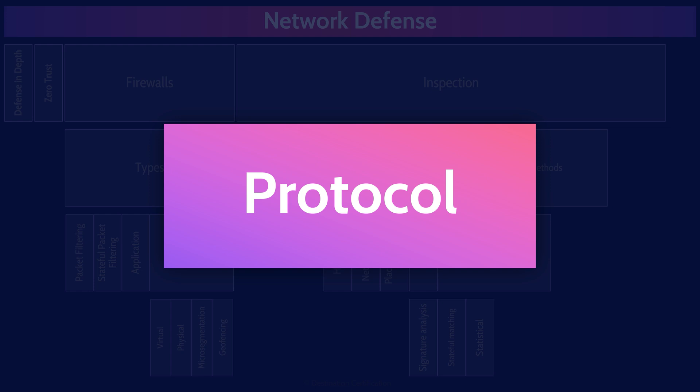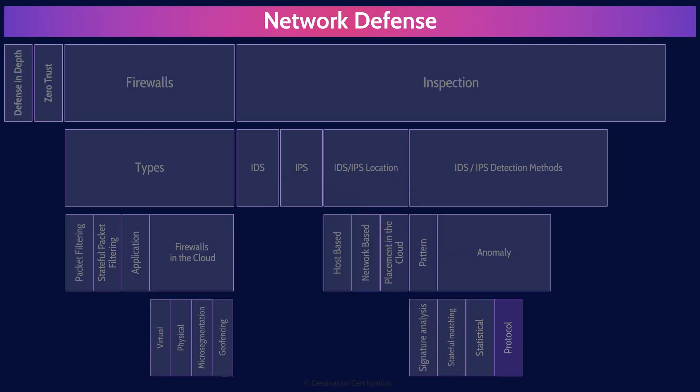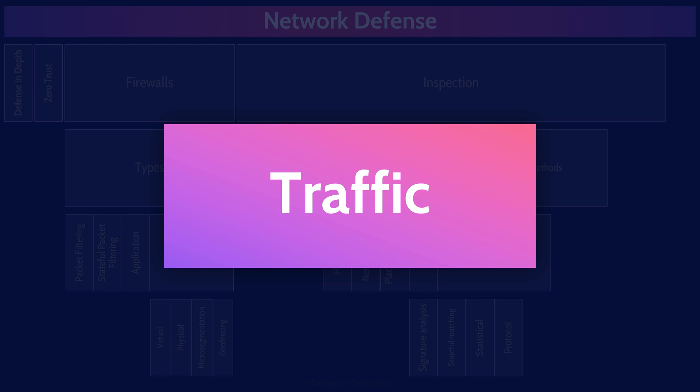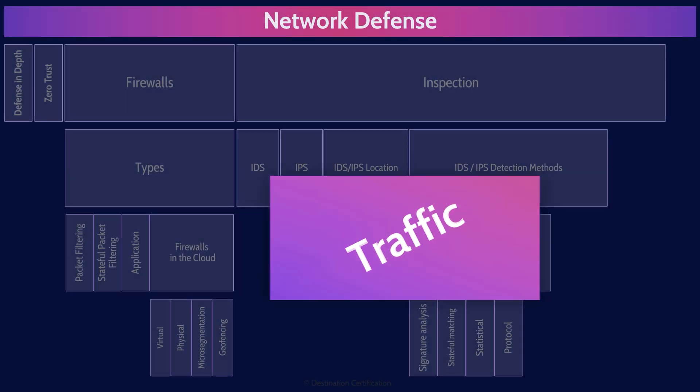For example, an organization might decide to allow only SFTP — secure file transfer protocol — and if FTP or especially TFTP, trivial FTP traffic, is detected, that would be an anomaly. The final anomaly-based detection method is traffic anomaly detection, which identifies anomalies in unexpected patterns of behavior in network traffic transmitted within a session — the system knows what a normal transmission sequence looks like and can detect anomalies outside of that.